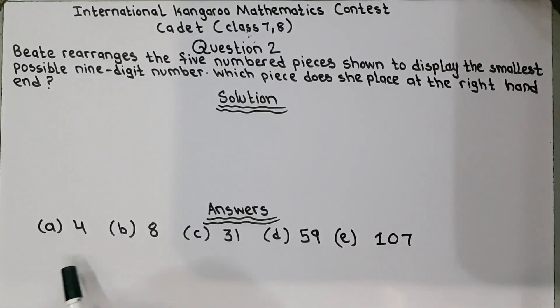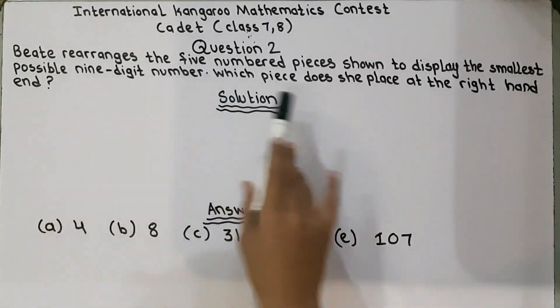So they are talking about these pieces. They are 9, 1, 2, 3, 4, 5, 6, 7, 8, 9. Now she has to place the smallest 9-digit number, and they are asking if she places the smallest 9-digit number, what digit from these will come on the right hand end?